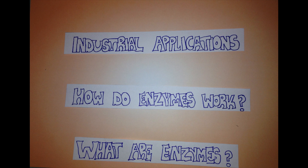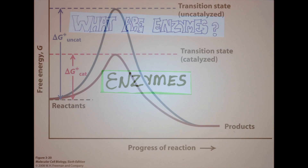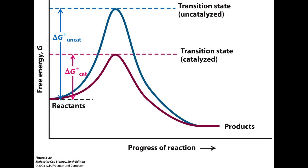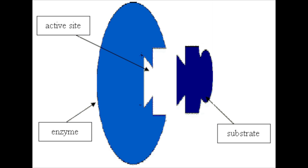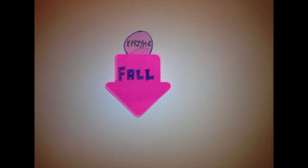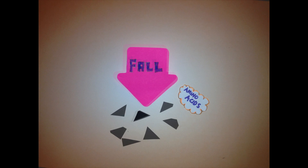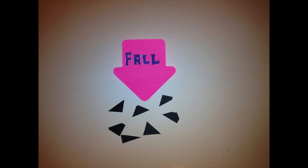Enzymes are biological catalysts that speed up chemical reactions, where each enzyme has a unique shape that determines its function. They do this by breaking down bonds and reforming new ones, breaking down molecules into smaller parts.